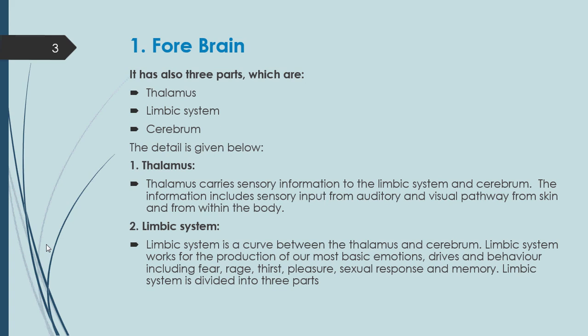Now let's discuss the detail of these three parts. Number one: thalamus — what does it do? Thalamus carries sensory information to the limbic system. Sensory information refers to our five senses: vision, listening, taste, smell, and touch — also known as haptic sense. Thalamus carries all of this sensory information.